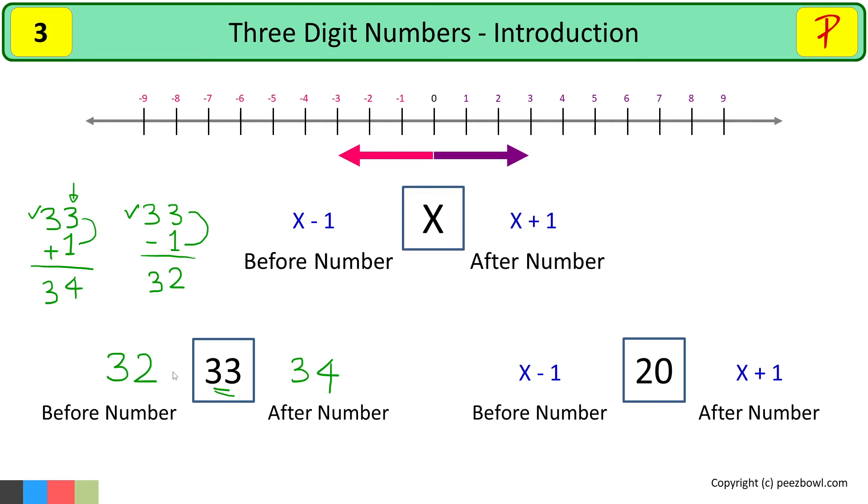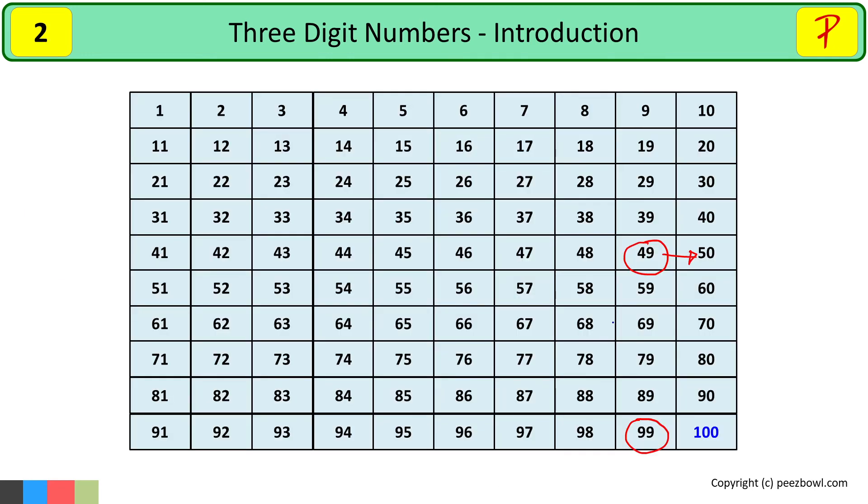Let us see the numbers again on the previous slide. Here we have number 20. So after 20 there is 21. Here you can see 21. And before 20 there is 19. This number. We need to move backward to get the before number.